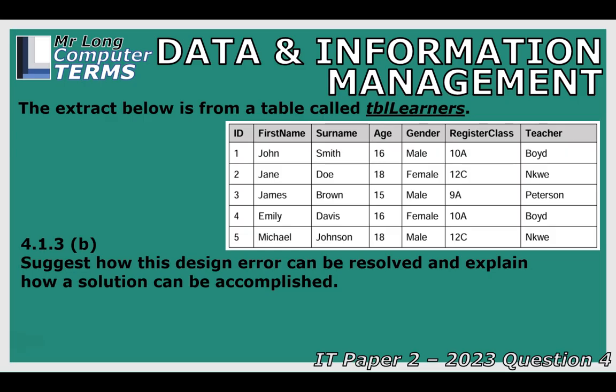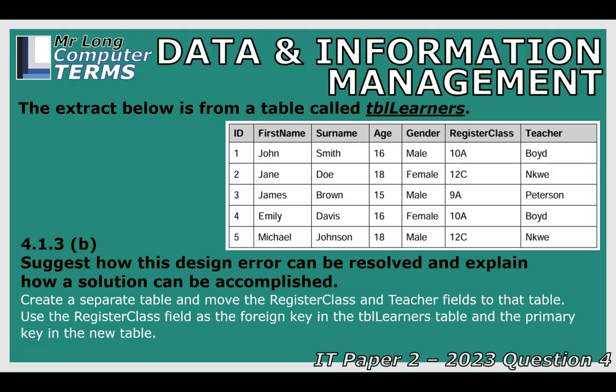The primary key of the register class table is the register class field, and the primary key of the learners table is the ID. We need to connect the two tables using a foreign key. Putting the learner ID into the register class table would only allow one learner per class, which doesn't make sense. Instead, the register class field goes into the learners table as a foreign key, allowing many learners to be assigned to the same class.